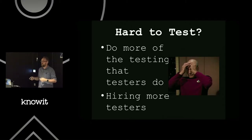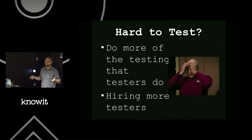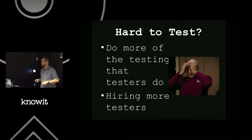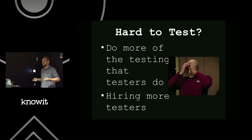Think about what to do when something is hard to test. You have a series of common reactions. You do more testing — you just do more of it. Most of the time it's the testing that testers do, which might not be the most effective way. If something's hard to test, developers could probably write interesting tools that would speed things up. But if you just do more of the testing that testers do, it still remains hard to test. And then there's hiring more testers — placing more testers on a team — which are kind of linked.